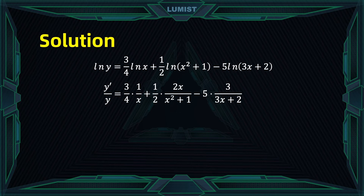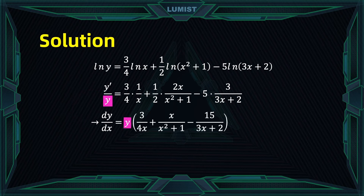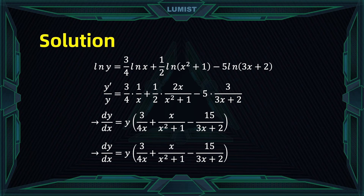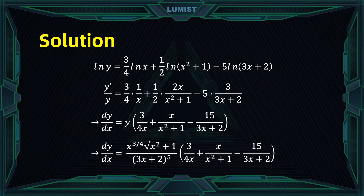In the third step, we change y′ to dy/dx and multiply both sides by y to isolate it on the left. So dy/dx equals y multiplied by the whole right-hand expression from step two. In the fourth step, we plug back the original y value into the equation to get the final derivative. As you can see, this is much simpler than applying the quotient rule, product rule, and so on.